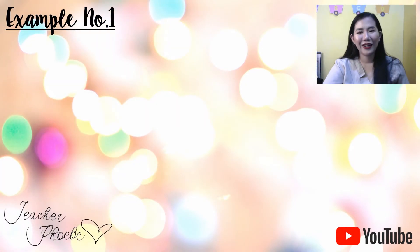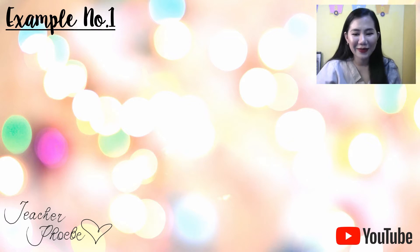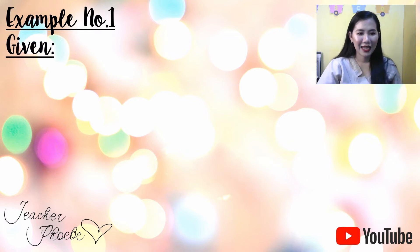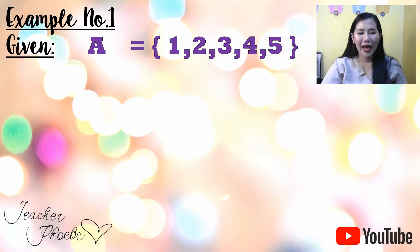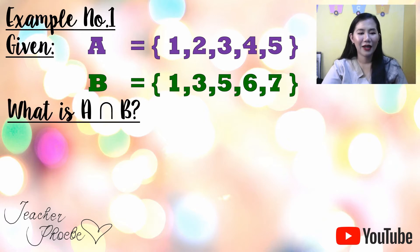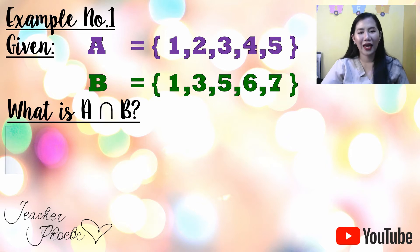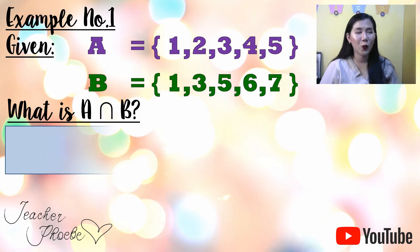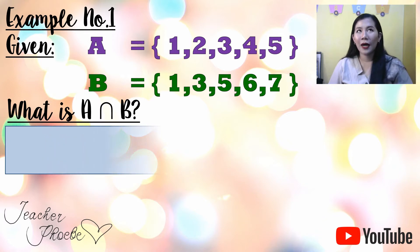Let us have Example 1. Given A is equal to {1, 2, 3, 4, 5} and B is equal to {1, 3, 5, 6, 7}, what is the intersection of A and B? In order to get the intersection of A and B, we just get the common elements.